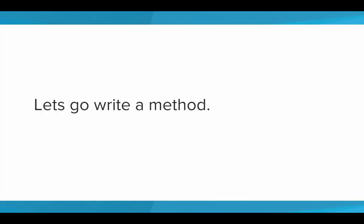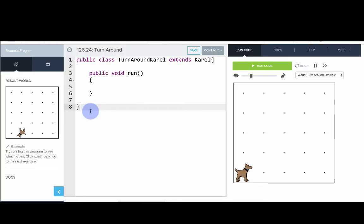So let's go into our code editor and write a method. Okay, so I have a class here called turn around Carol and what we want to do is we want to have Carol move and then turn around. So what we'll do first, say move, and then we'll actually call the method, we'll say turn around. So let's run that.